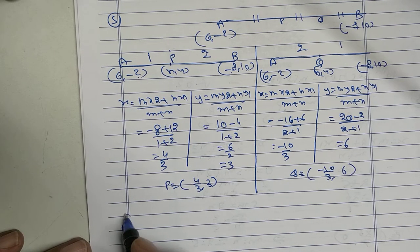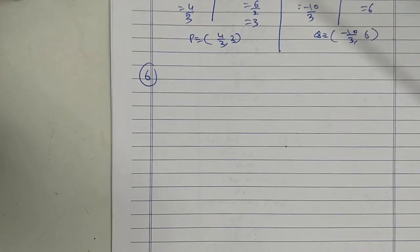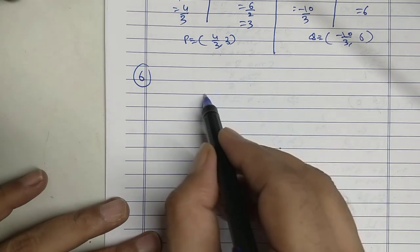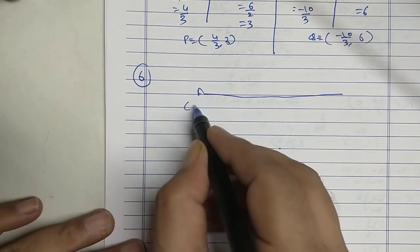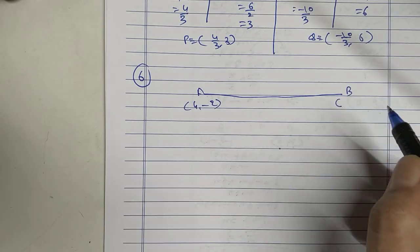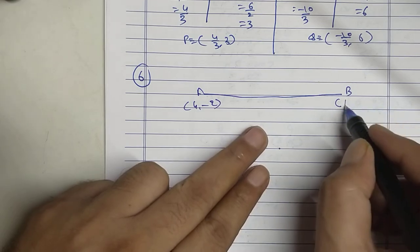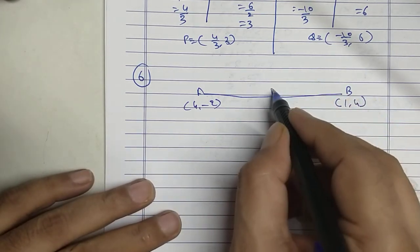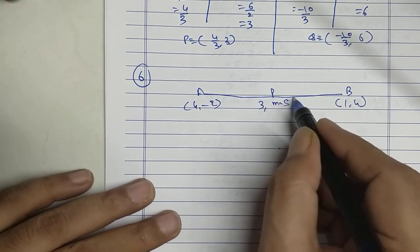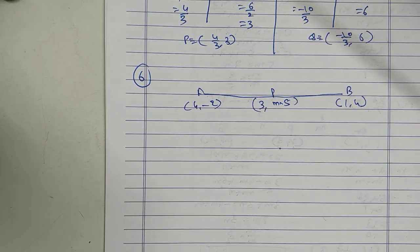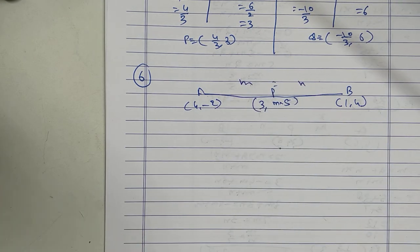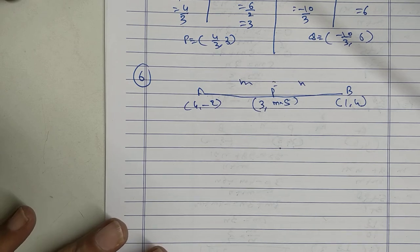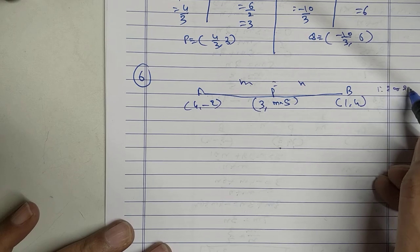Sum number 6. This is point A and B. A is 1 and 4. B is 3 and m minus 5. So that P trisects A and B. Means I have to find this ratio. Ratio either will be 1 is to 2 or 2 is to 1. Remember. Either 1 is to 2 or 2 is to 1.